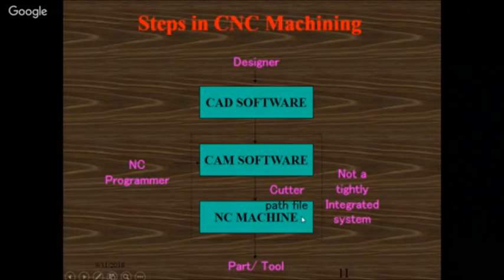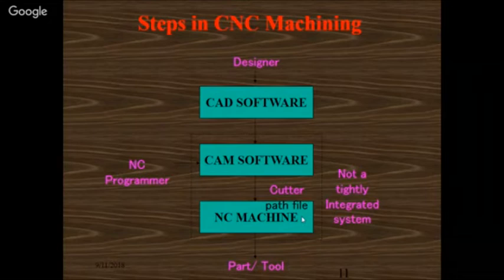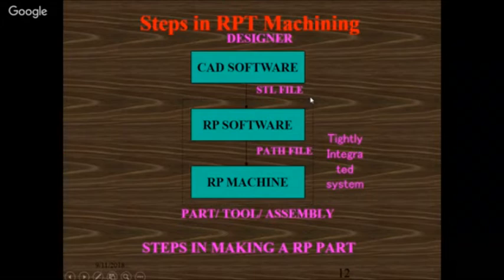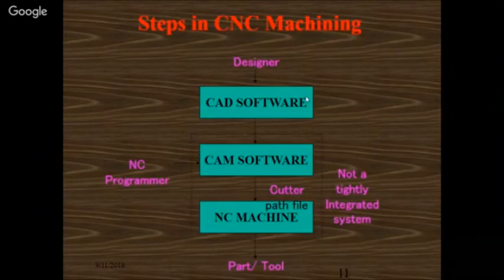In RPT, the designer uses CAD software, develops an STL file or IGS file, then sends it to the RPT machine. Depending on your process choice — whether LOM, FDM, SLS, SLA, 3D printing, or inkjet — the process proceeds accordingly. This is the main difference between CNC machining and RPT machining.